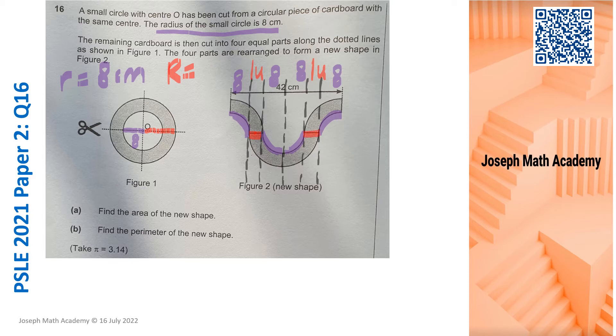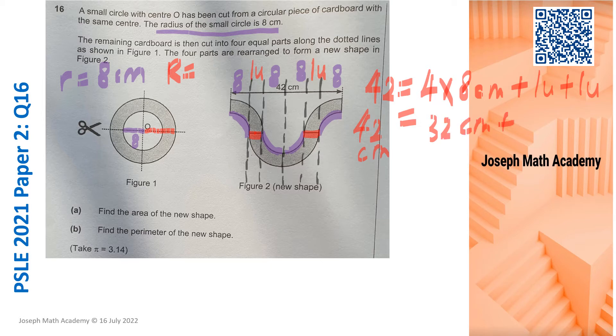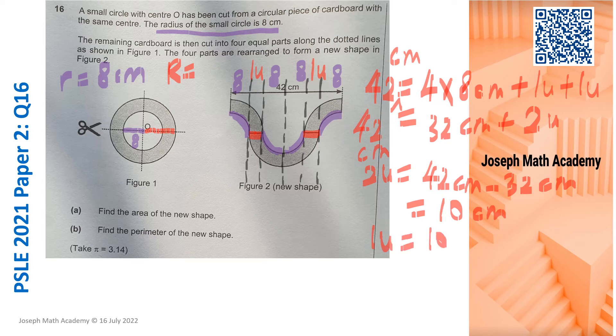So the 1 unit is actually the gap between the 2 circles, the shaded gap. I highlighted it in red. So what does it mean? That means 42 is made up of 4 groups of 8 and 2 one units. Meaning 42cm is actually 32cm plus 2 units. So 2 units must be 42cm minus 32cm. That gives us 10cm. So 1 unit must be 10 divided by 2, that is 5cm.